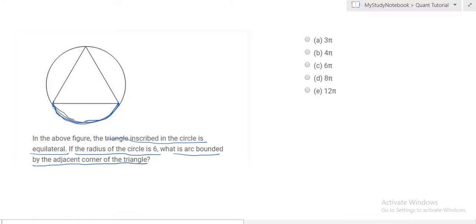From the picture, it's apparent that this arc is actually one third of the total circumference of the circle. So the arc would be one third of the circumference, which is 2πr. This is what we have to find.